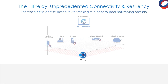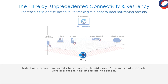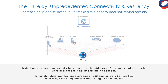The HIP relay, a HIP service feature, is the world's first identity-based router and introduces identity-based routing that delivers secure connectivity between networks and locations that previously was impractical, if not impossible, to connect. It's now possible to be anywhere in the world and securely connect to resources — whether it's cloud, internal, virtual, or remote environments — without changes to the underlying routing and switching infrastructure.